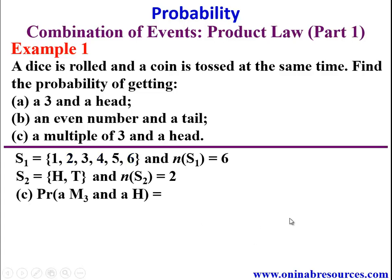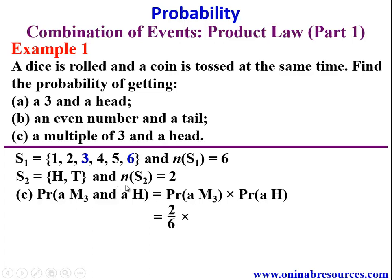For part (c), a multiple of three and a head. P(multiple of 3 and head) = P(multiple of 3) × P(head). The multiples of three in the sample space are 3 and 6, so P(multiple of 3) = 2/6. Then 2/6 × 1/2: the two cancels, leaving 1/6 as the final answer to Example 1c.